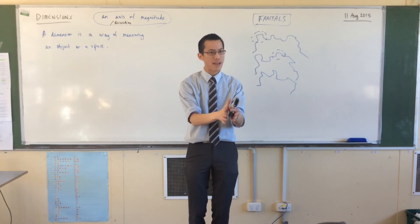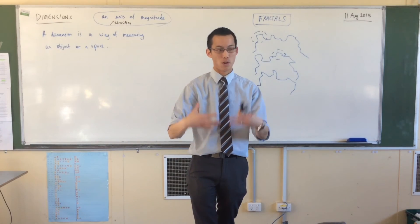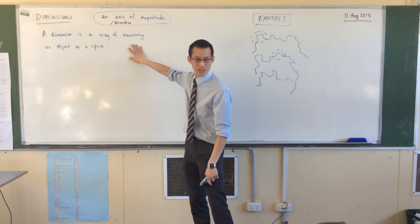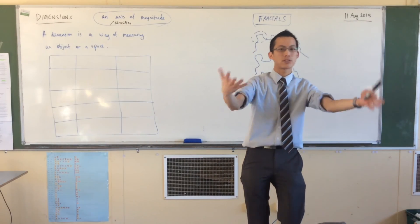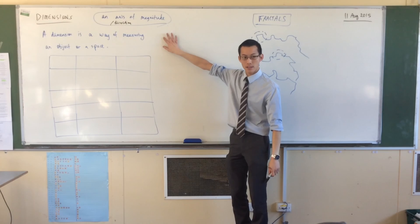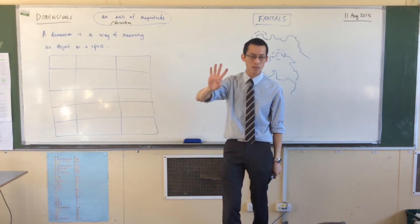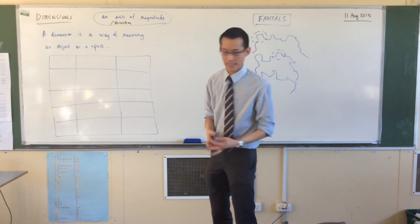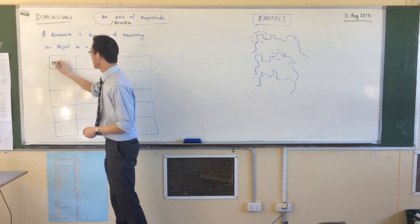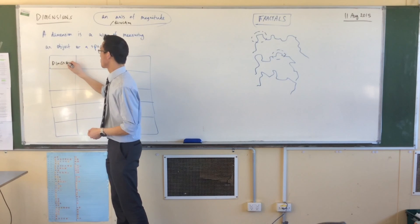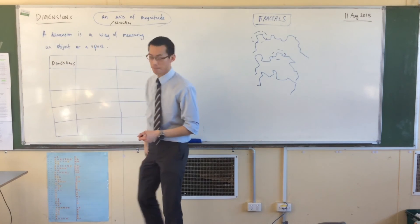Now let's draw ourselves a table to try and unpack in sort of concrete terms what these dimensions are. What we're trying to think about is the different kinds of objects or spaces that have different kinds of dimensions. And there are four that you are familiar with on a daily basis. So our headings are dimensions, and this is going to be just a number.